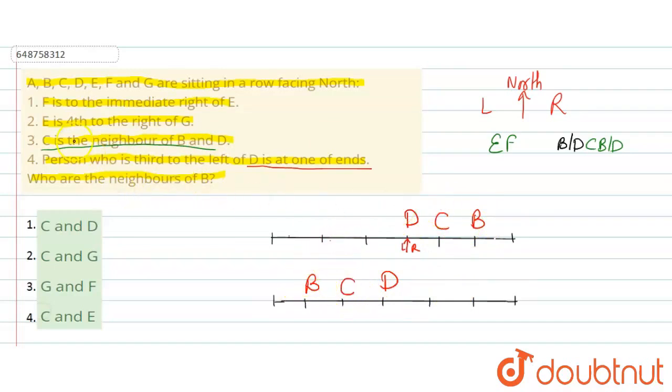Now let's see, for E it's given that E is fourth right of G. E is fourth right of G, so this is only possible if G comes here. G's first right, second right, third right and fourth right.